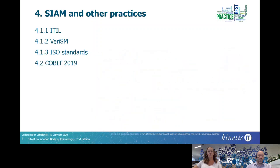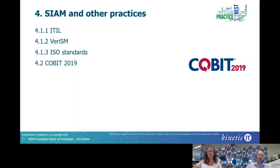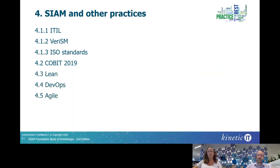There was also a change in COBIT, which has been updated from COBIT 5 to COBIT 2019. These changes were actually relatively minor for the descriptions used in the Foundation book, but we had to make sure that all the text was still relevant, accurate, and if necessary, aligned to the new COBIT 2019 practice. And this was also the case with the sections on Lean, DevOps and Agile, which required some minor updates to ensure the text provided was aligned to the accurate description and application of these practices.